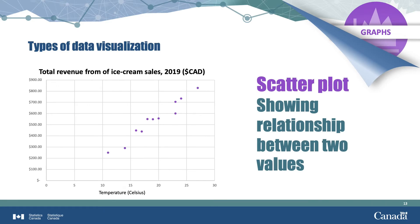A scatter plot is great for showing the relationship between two values. In this graph, we can clearly see the relationship between temperature on the horizontal axis and ice cream sales on the vertical axis. We can see how ice cream revenues increase with increasing temperatures.